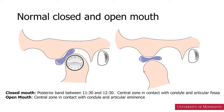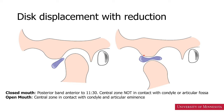In normal open mouth condition, the central zone of the disc is in contact with the condyle and the articular eminence. In disc displacement with reduction, in the closed mouth view, the posterior band is located anterior to 11:30. The central zone is not in contact with the condyle or the articular fossa. In this case, the disc reduces to normal relationship when the mouth is open, so the central zone is in contact with the condyle and the articular eminence.